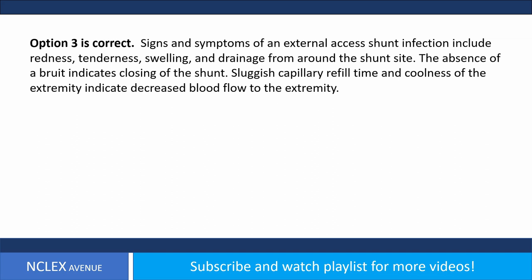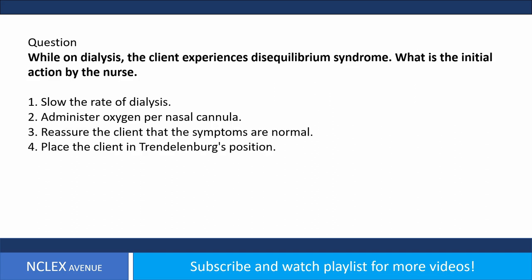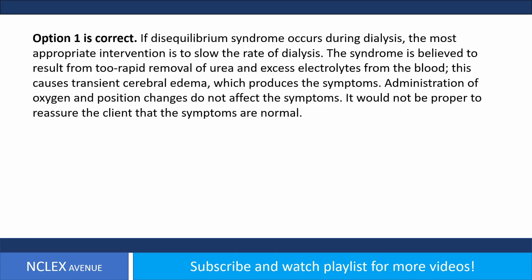Question. While on dialysis, the client experiences disequilibrium syndrome. What is the initial action by the nurse? 1. Slow the rate of dialysis. 2. Administer oxygen per nasal cannula. 3. Reassure the client that the symptoms are normal. 4. Place the client in Trendelenburg's position. Answer. Option 1 is correct. If disequilibrium syndrome occurs during dialysis, the most appropriate intervention is to slow the rate of dialysis. The syndrome results from too rapid removal of urea and excess electrolytes, causing transient cerebral edema. Administration of oxygen and position changes do not affect the symptoms, and it would not be proper to reassure the client that symptoms are normal.